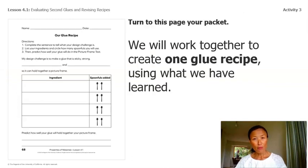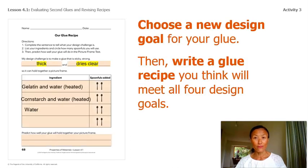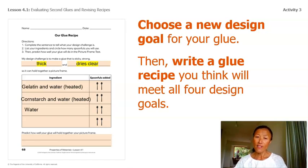Now turn to this page in your packet — it's titled 'Our Glue Recipe.' We'll work together to create one glue recipe using what we've learned. As you're planning your new glue recipe, think about the effect that adding certain ingredients or adding different amounts of ingredients will have on your glue. Now we're going to choose a new design goal and then write a glue recipe that you think will meet all four design goals. Based on what we've tested and tried, this is a glue recipe I came up with because it seemed to have most of the properties that met our goals.